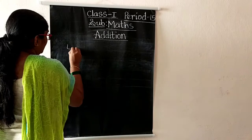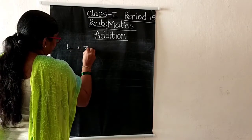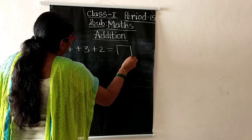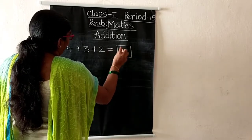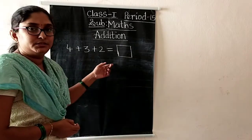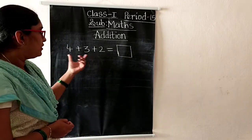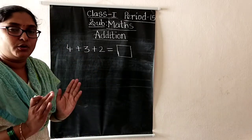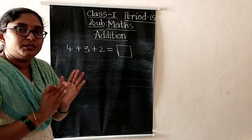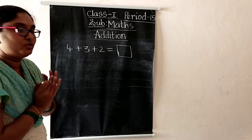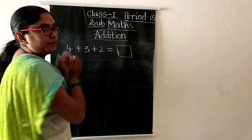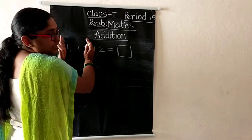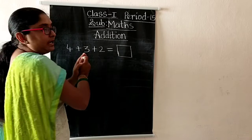Look. Four plus three plus two equals box — that is the answer we have to write here. So here there are three numbers. We have to add these three numbers. How should we add them? First of all, we learnt how to add two numbers, so first we should add the first two numbers.